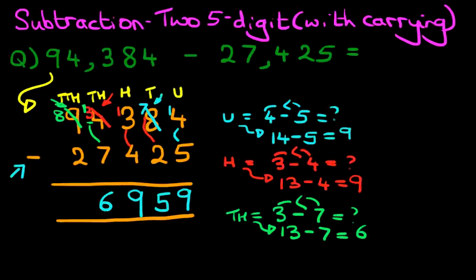And lastly, the ten thousands column. We have eight minus two. That's right, the answer is six.